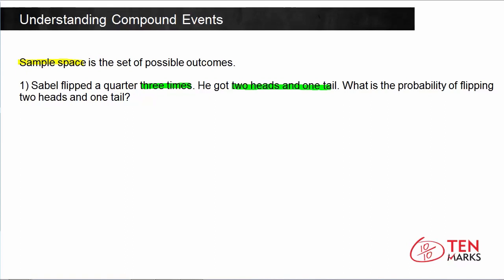You can use a tree diagram to draw this out. So I'm going to start — let's say there's a quarter, Q. Now if you flip this quarter, you have two outcomes: heads or tails. This is the first flip — first coin toss. And we know that Sable flipped three times, so we need to keep going.